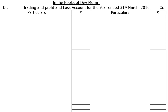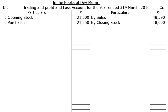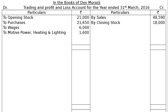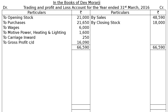We start with the trading account credit side: by sales Rs 48,590 and by closing stock Rs 18,000 (being an adjustment, it will also be shown as current assets in the balance sheet). On the debit side: to opening stock Rs 21,000, to purchases Rs 21,650, to wages Rs 6,000, to motive power heating and lighting Rs 16,000, and to carriage inward Rs 250. The credit side total is Rs 66,590, and the difference gives us gross profit carried down of Rs 16,090.